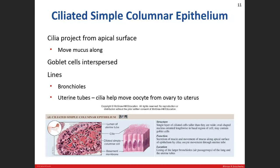The second type of simple columnar epithelium is the ciliated — so we will have cilia on the apical surface. Cilia have to do with movement, but the cell remains stationary while the cilia brush or move things past it. In this case, the cilia move the mucus that the goblet cells have been producing.